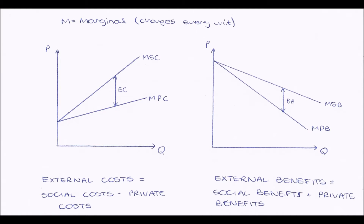We can show externalities on graphs, and this is what I've shown here. Just a quick point: anything that has an M in front of it on any of these graphs means marginal, so it will change for every unit.